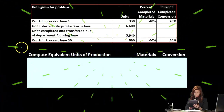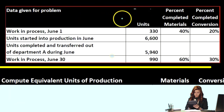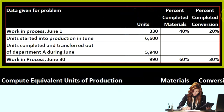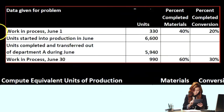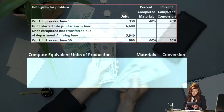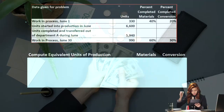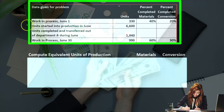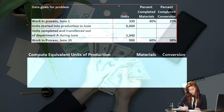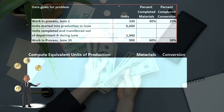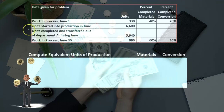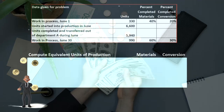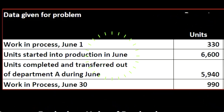In this presentation we will take a look at equivalent units of production using the weighted average method. This will be our given data. Up top we have the units, the percent completed for materials, and the percent completed for conversion. Then we have the work in process as of June 1st, which is the beginning of our time period, and the units started into production in June, and the units completed and transferred out of department A during June.